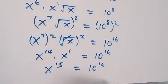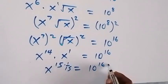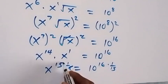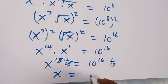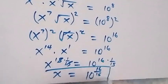Now to get x, we raise both sides to the power of 1 over 15, so that the left side cancels out, and we have x equals 10 raised to power 16 over 15. So here we have the value of x from Method One.